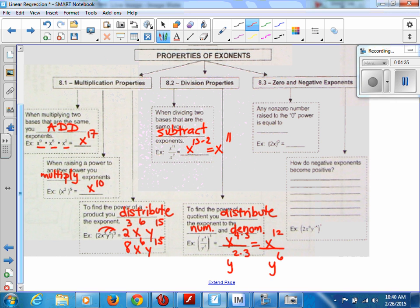Let's look at zero and negative exponents. Any non-zero number raised to the 0 power is equal to, in other words, if you have 5 raised to the power of 0, what will you get? No? 1. It's always 1. Always 1. Exactly. Always. No matter what.